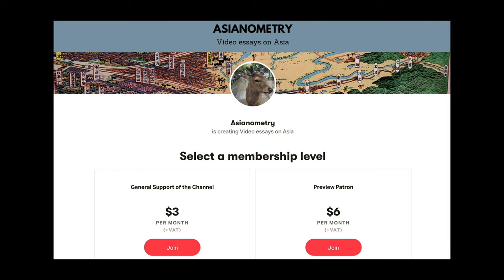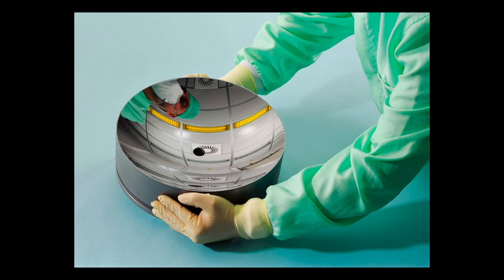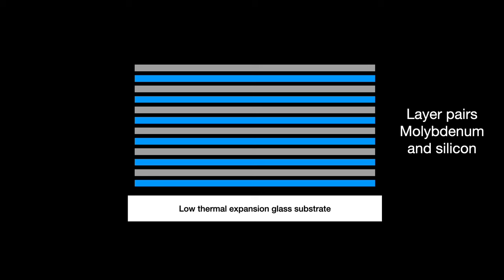The EUV reticle or mask is a mirror. On its surface is a protective capping layer and a mirror layer, a multi-layer Bragg reflector made of 40-50 alternating layer pairs of molybdenum and silicon. The mirror layer sits on top of a substrate of low thermal expansion glass. The essential point for this substrate is that it must be extremely clean and stable over a wide range of temperatures.